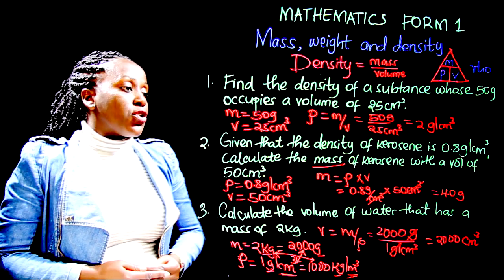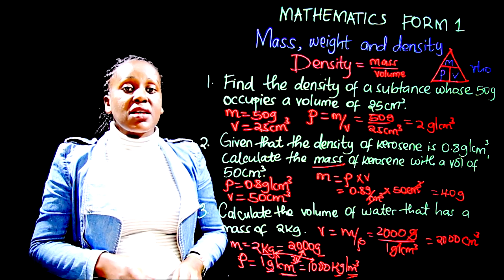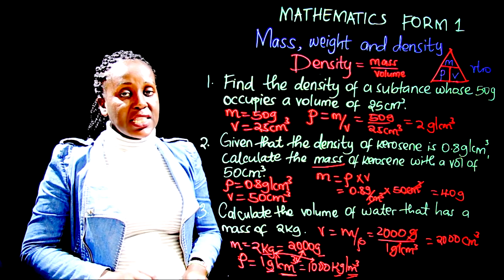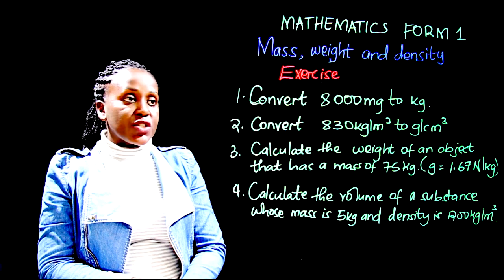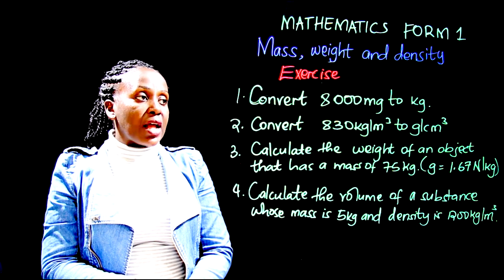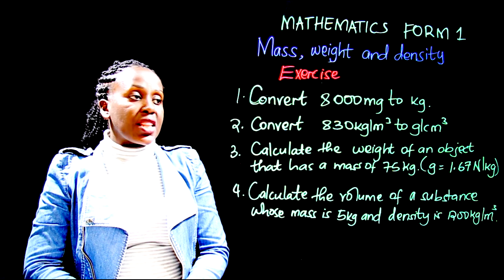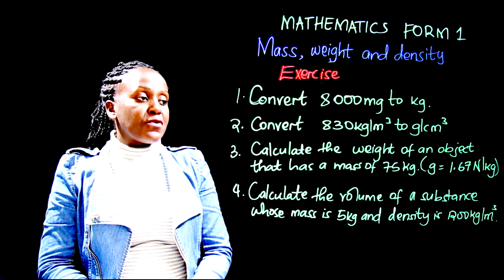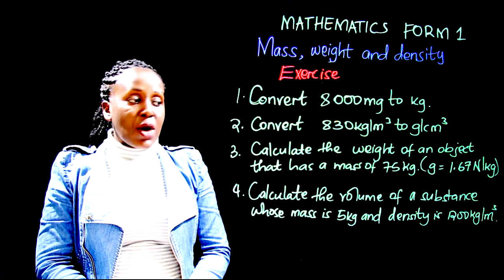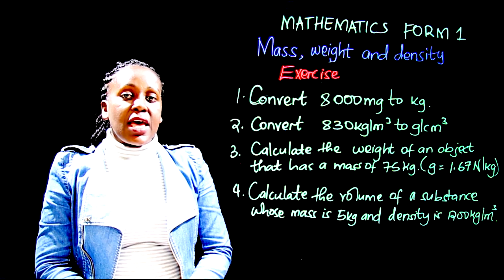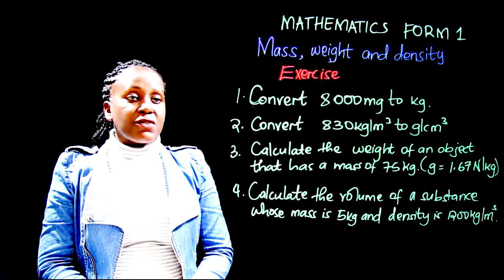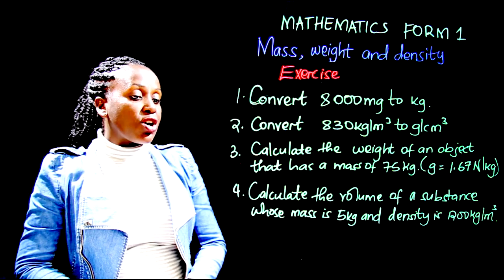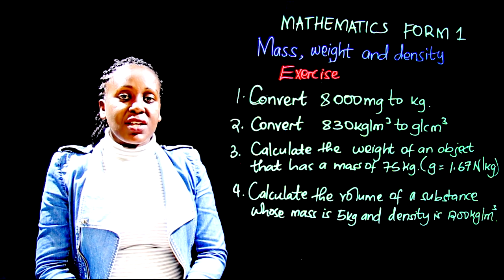That is how you work out questions about density, mass, and volume. For your assignment, work out these four questions: convert 8000 milligrams to kilograms; convert 830 kilograms per meter cubed to grams per centimeters cubed; calculate the weight of an object with a mass of 75 kilograms where gravitational force is 1.67 newtons per kilogram; and calculate the volume of a substance whose mass is 5 kilograms and density is 1200 kilograms per meters cubed. Thank you for being in this lesson — see you in the next one.